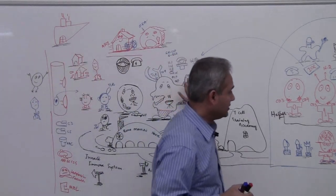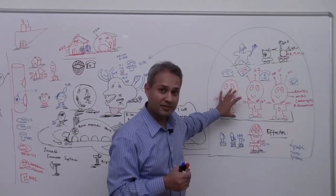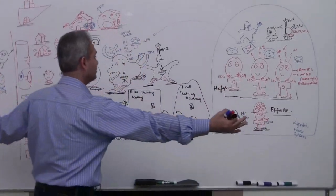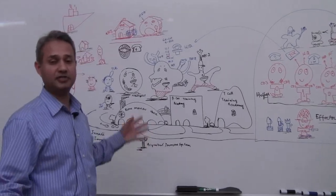So the innate system activates acquired system. Acquired system returns the favor and activates the innate system. So this is the bigger body's picture. This is how the defense mechanisms are working.